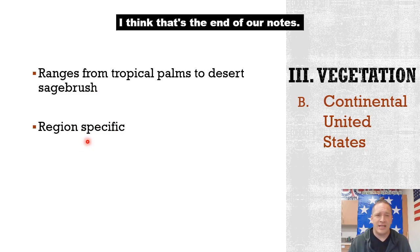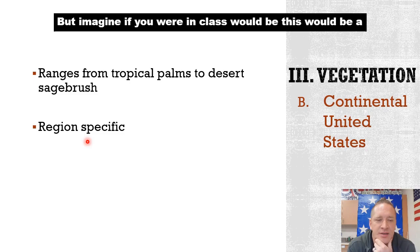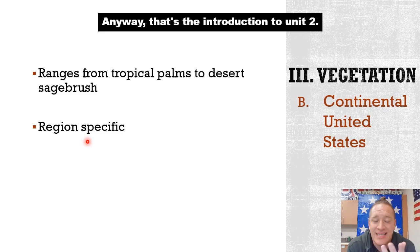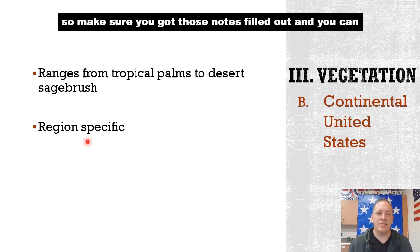And I think that's the end of our notes — 25 minutes, which is actually better than last week. Imagine if you were in class, this would be a 47-minute class, so 25 minutes is not bad. Anyway, that's the introduction to Unit 2: United States and Canada. That'll be the focus for the next couple of weeks. Now you know the basics, so make sure you've got those notes filled out, submit them, and have a great day. Thank you.